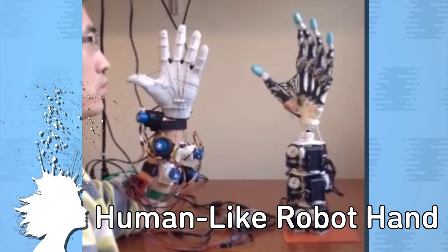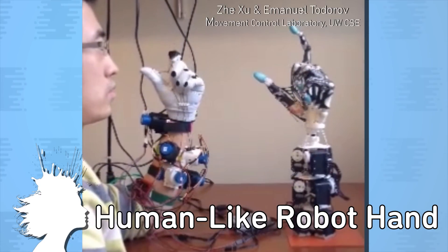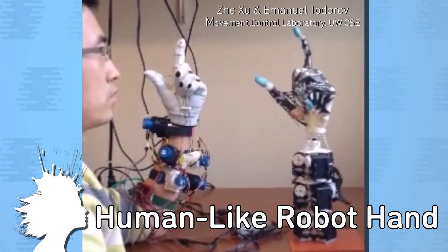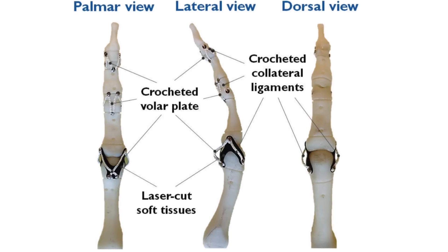This may be the most human-like robot hand ever made. Researchers from the University of Washington created the anthropomorphic robot hand by laser scanning the bones of a human hand and 3D printing artificial replicas.